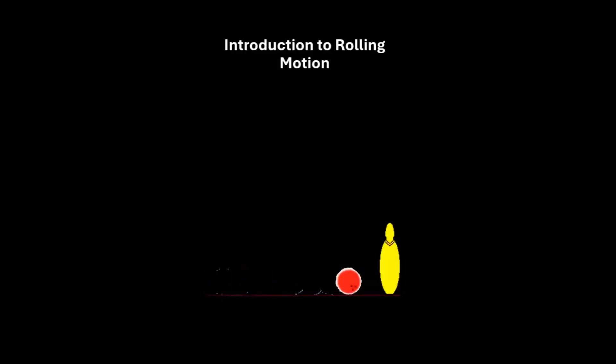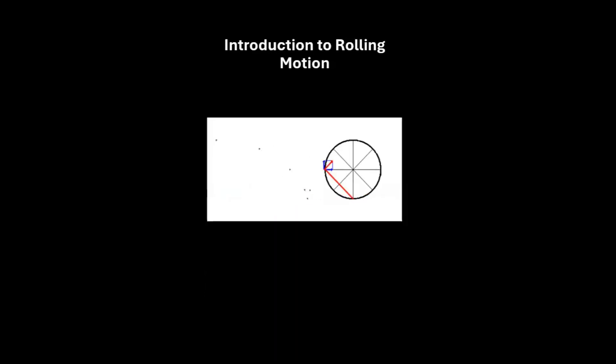Rolling motion refers to the movement of an object where it simultaneously undergoes translational motion and rotational motion. In this type of motion, the object not only moves forward or backward, it is also rotating about its axis like a wheel, ball, or a cylinder.